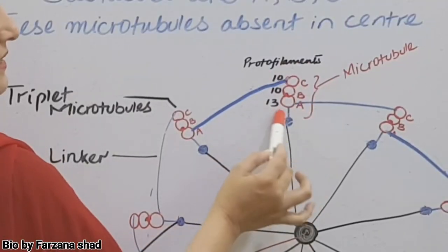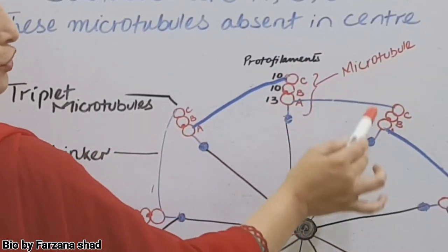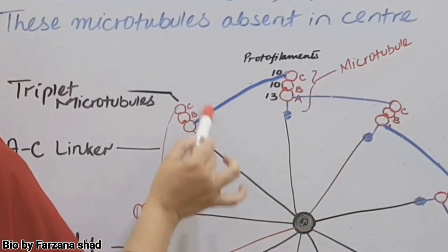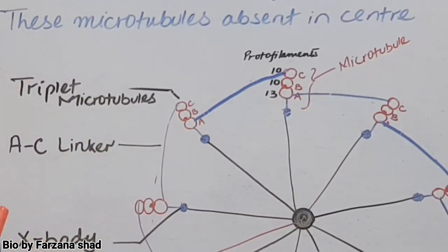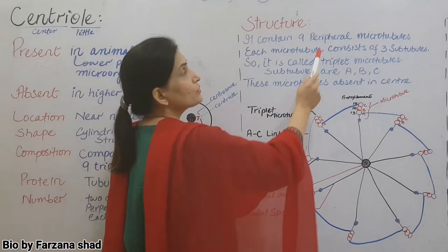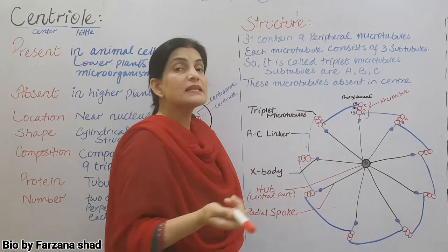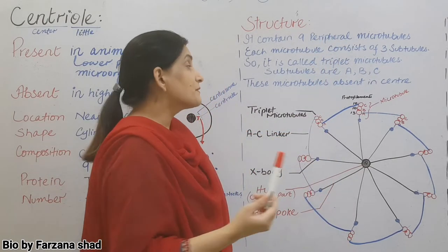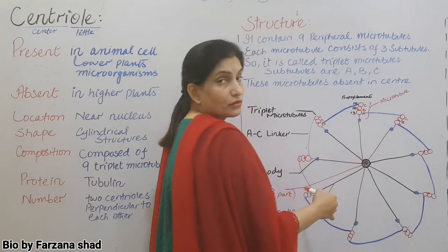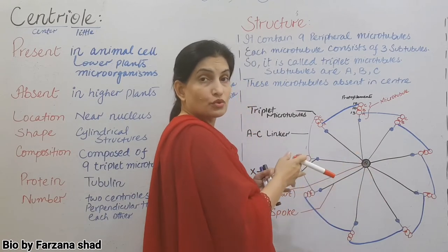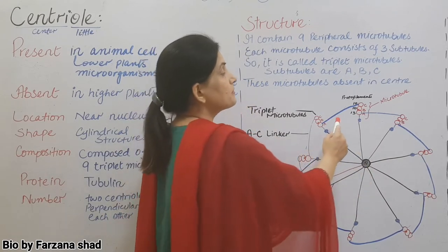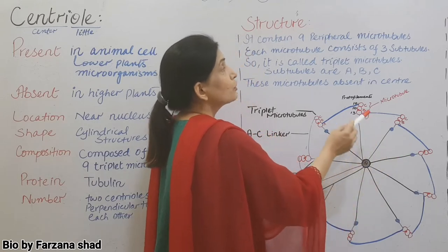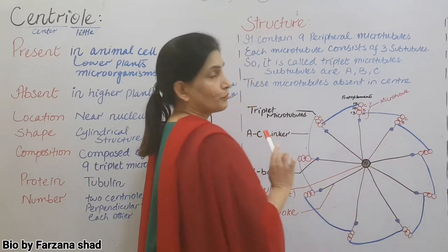This red color you see, this is one microtubule, this is the other microtubule, this is the microtubule. For these microtubules, see what term we use - peripheral. What is the meaning of peripheral? Which is present at the boundary, present at the margins. For that we use the term peripheral. So these are the nine peripheral microtubules.